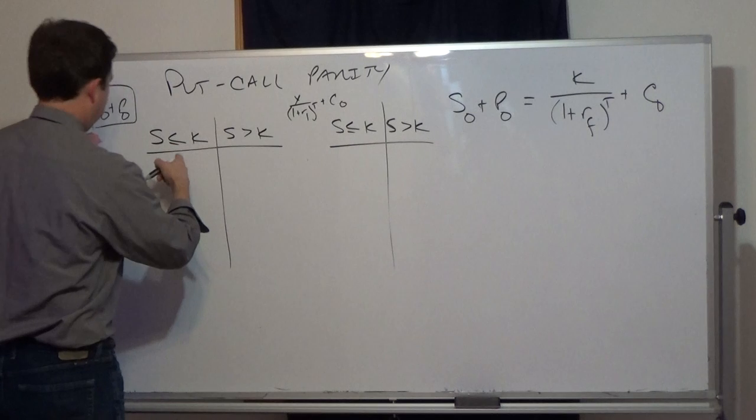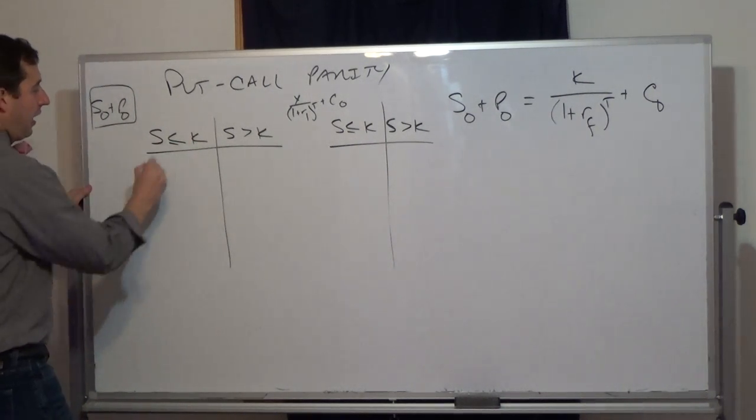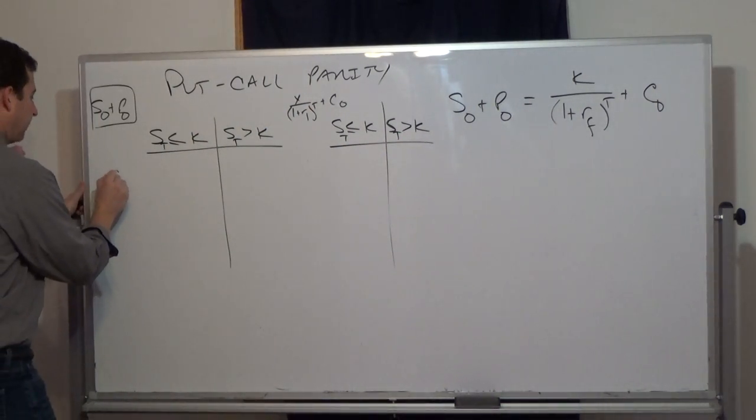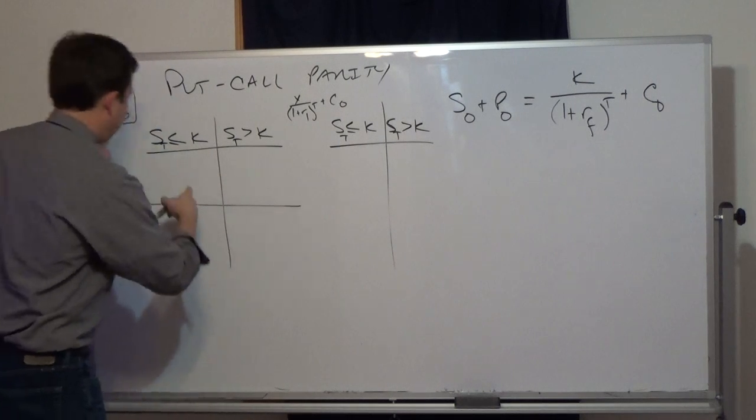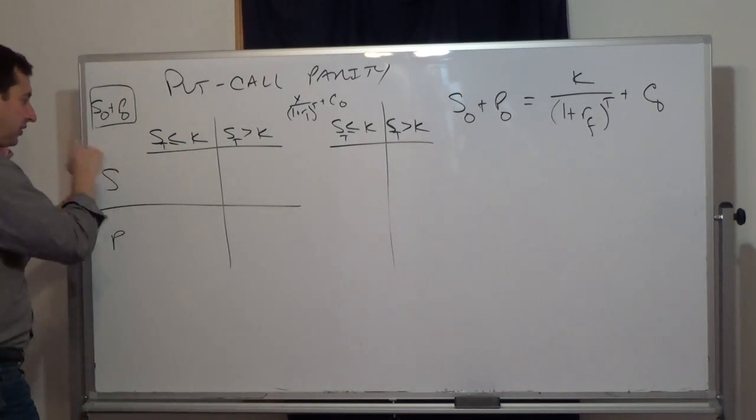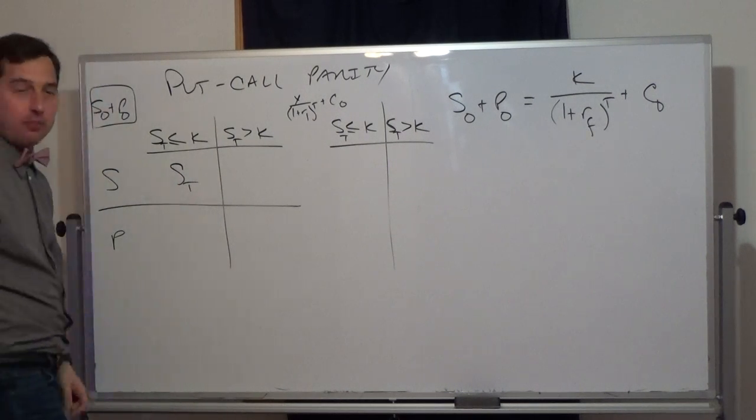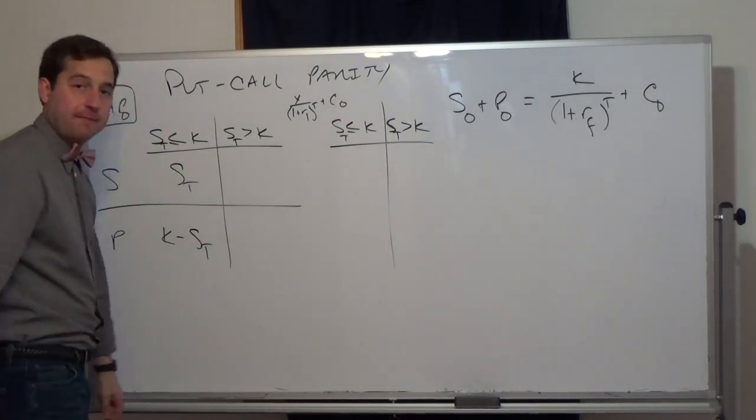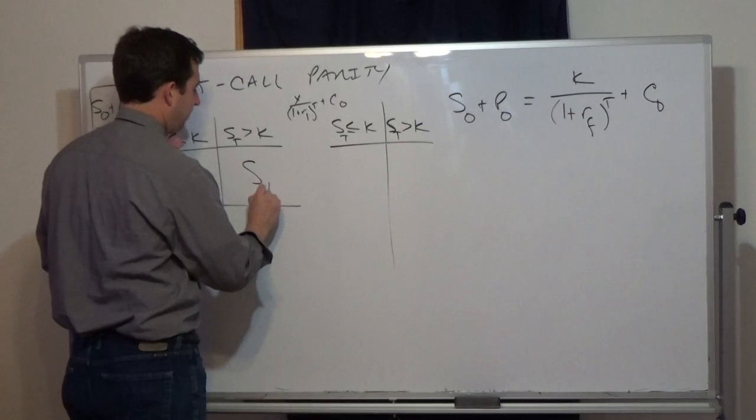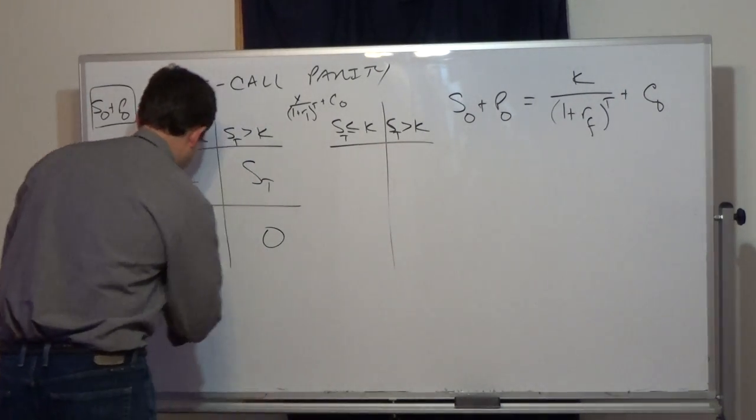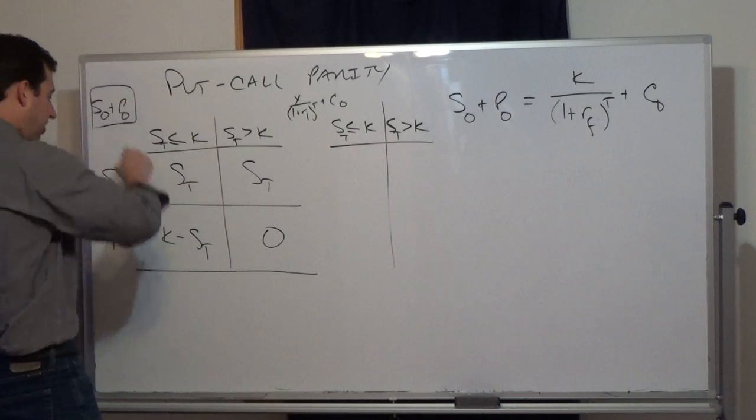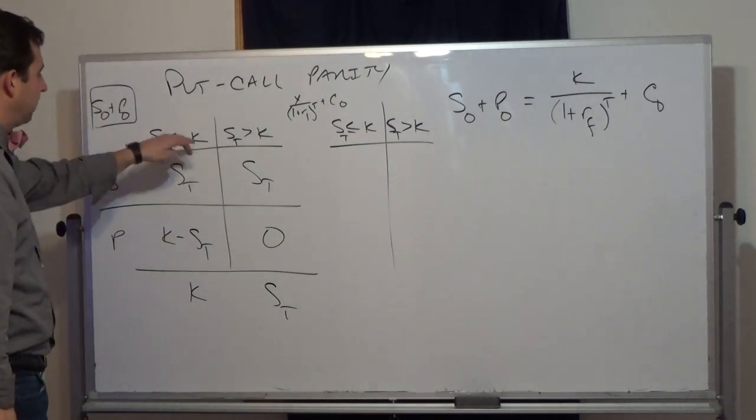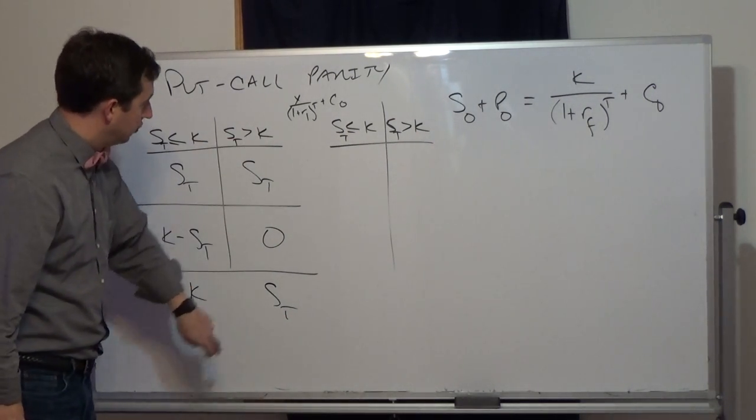What does this position pay at expiration S sub T, and what does this position pay at expiration? We have the stock here and the put. If the stock is less than the strike, the stock still always pays the stock price. The put here however is going to pay the strike minus the stock. Over here again, the stock just pays the stock and the put pays zero. If you look, the payoff on the combined position, just add these columns. If the stock is less than the strike, it pays the strike. If the stock is greater than the strike, it pays the stock.